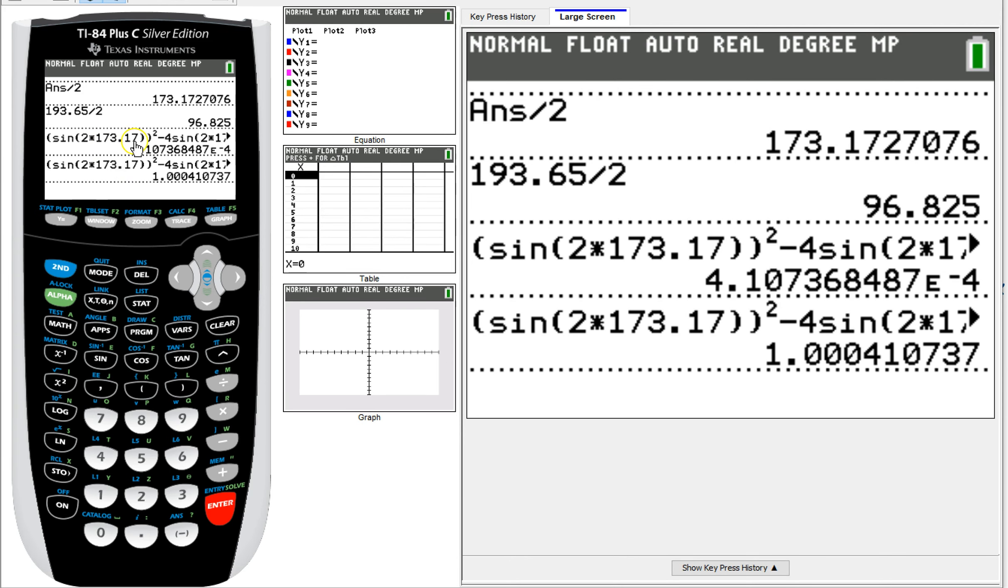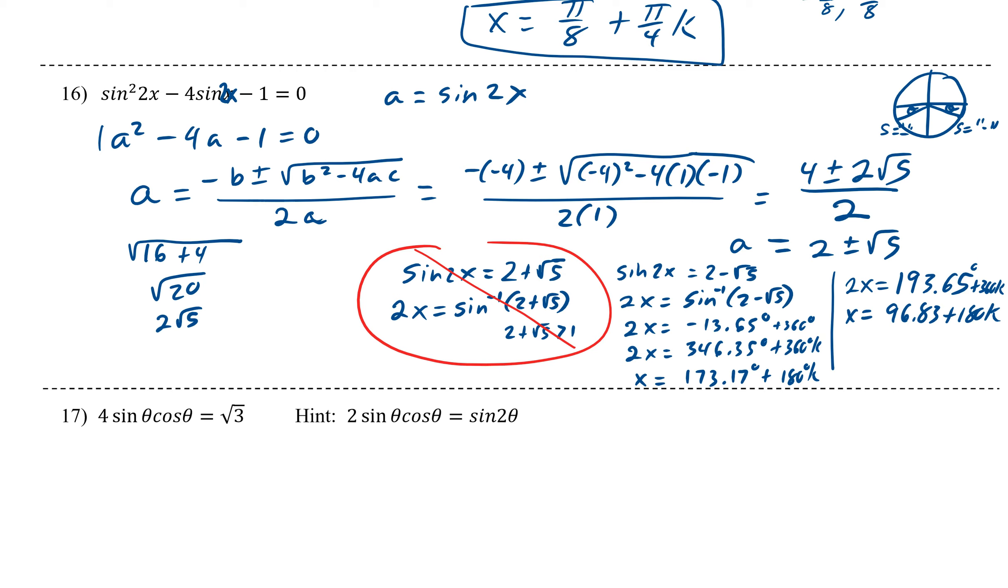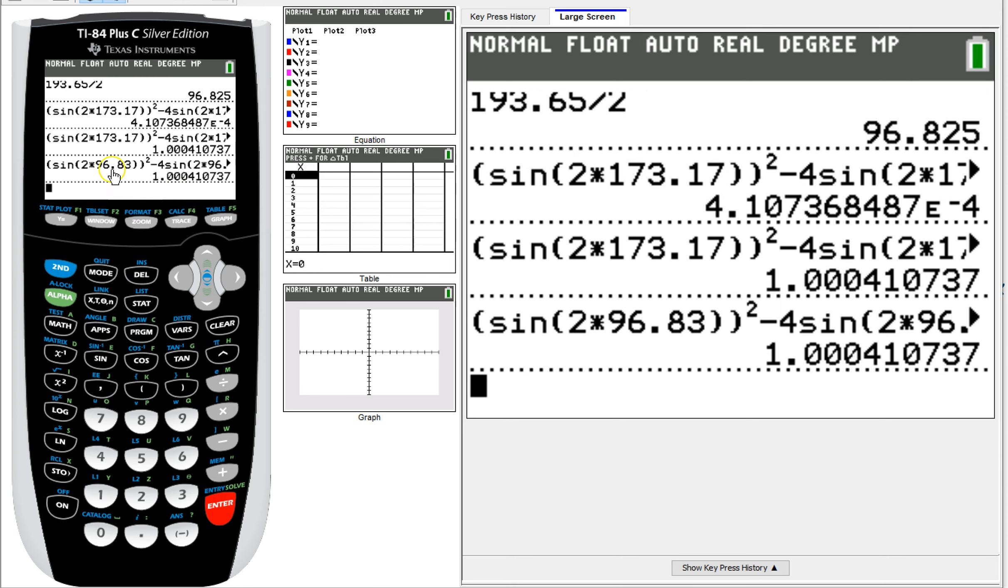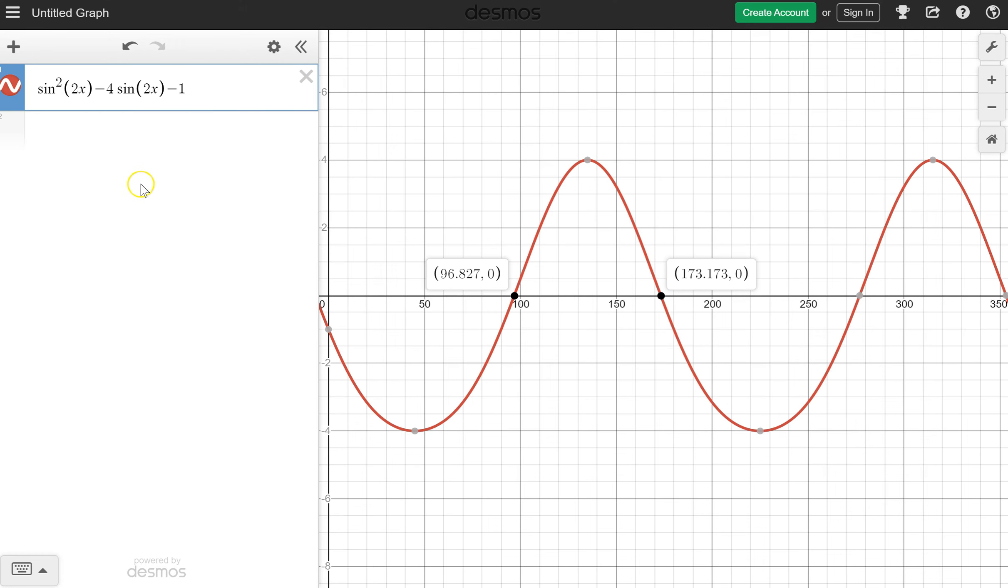So checking the 173.17, we get this. This is a round-off error for zero. So what you can do sometimes when you see that, and you're not really that great with scientific notation, is you can just come in here and go, okay, well, it's going to be this take away 1. So as long as this is 1, we're good. So basically, remove the minus 1, and you see it becomes a 1. So 1 take away 1 would be 0. And then, checking the 96.83, we also get 1.